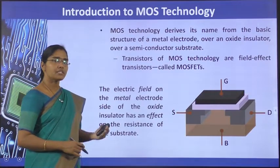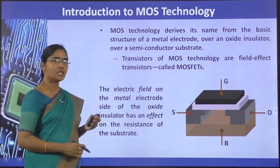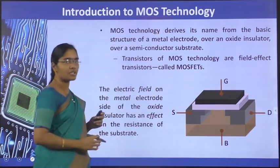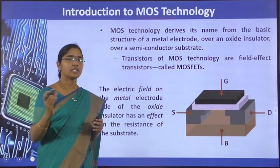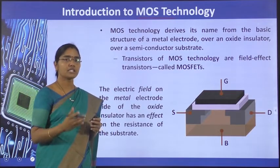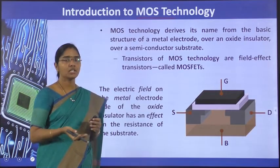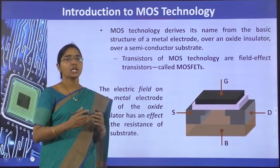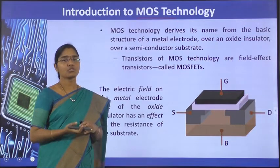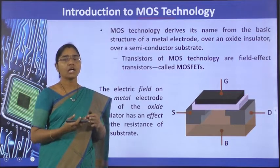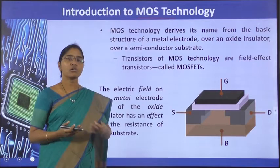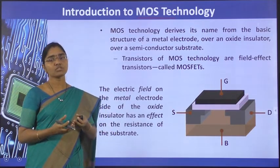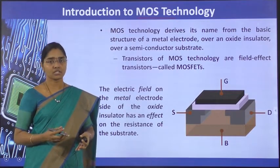The technology using MOSFETs is called MOS technology. In the semiconductor industry, if only N-MOS transistors are used it is called N-MOS technology; if both N-MOS and P-MOS are used it is called CMOS technology. If BJTs are used it is called bipolar technology, and if both BJTs and CMOS are used it is called Bi-CMOS technology.